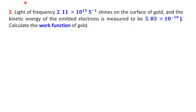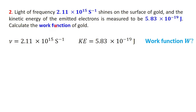Now that we've solved the case for cesium, let's move on to our second problem, this time with gold. The question says: light with a frequency of 2.11 times 10 to the power of 15 per second shines on gold, and the emitted electrons have a kinetic energy of 5.83 times 10 to the power of minus 19 joules. We need to determine the work function w of gold. We already know the frequency of the light and the kinetic energy of the ejected electrons — what we need to find is the work function w.